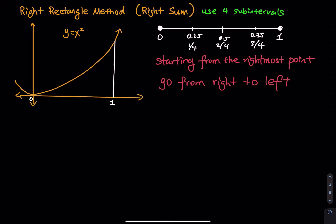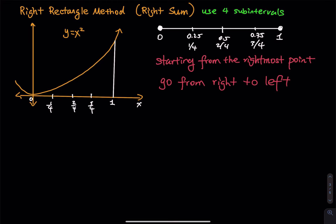Let's bring the subintervals to the x-axis. So on the x-axis we have 1 over 4, 2 over 4, and 3 over 4. I've cut 0 to 1 into 4 subintervals. Starting from the rightmost point — there is a big dot all the way to the right — the length is 0.25, so you go 0.25 and then go down.